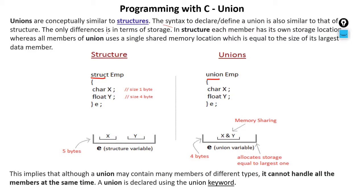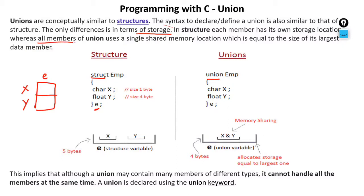The only difference between structure and Union is in terms of storage. In a structure, each member has its own storage location — the moment you create a variable, one memory block is created and every member has its own memory. But in a Union, all members share a single shared memory location.